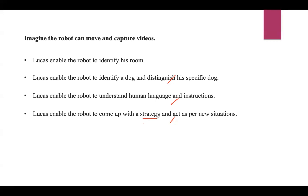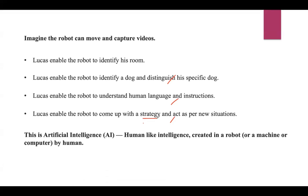For example, search only in shaded places if it is raining. In summary, to find Rusty, the robot needs human-like intelligence. If Lucas could do that, next time when he loses his dog, his robot friend might just find him using its artificial intelligence. This is nothing but artificial intelligence — human-like intelligence created in a robot. The robot can be either a machine or a computer which is created by humans.